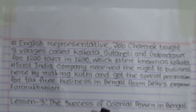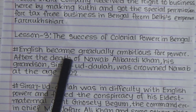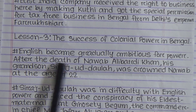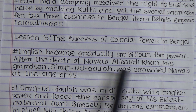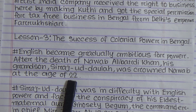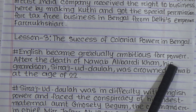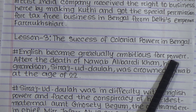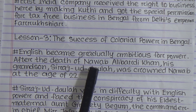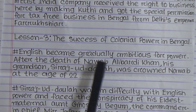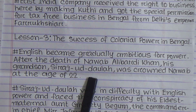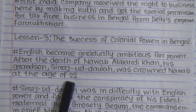Now we will learn lesson 3: 'The Success of Colonial Power in Battle.' English became gradually ambitious for power. After the death of Nawab Alivardi Khan, his grandson Sirajuddaula was made Nawab at the age of 22. He was the last Nawab of Bengal.